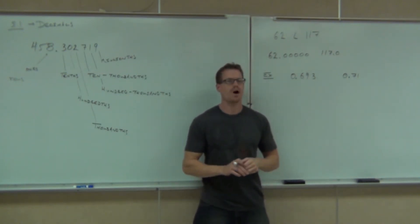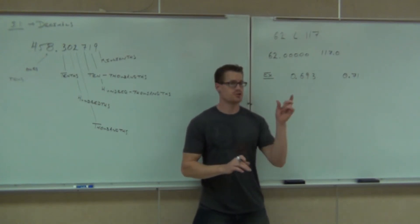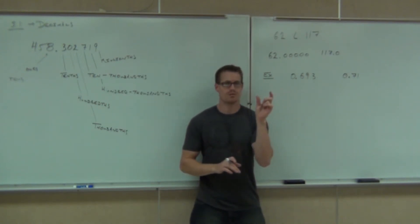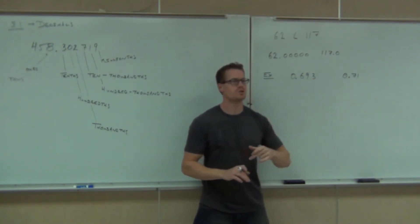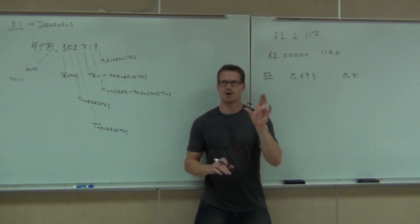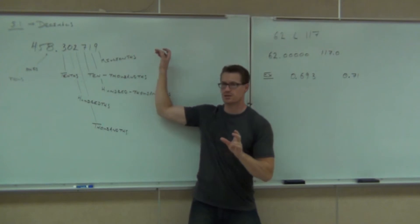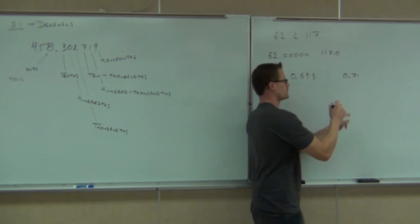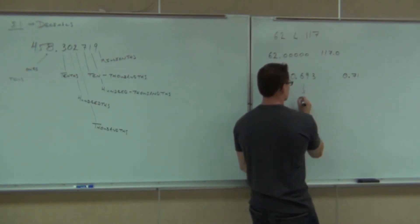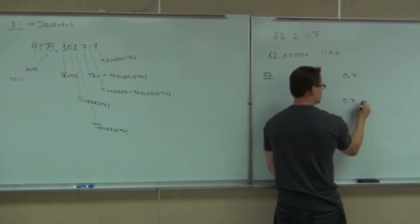Which one is bigger — 0.693 or 0.71? You could look at the first place value, that would be the tenths. Whatever has more tenths is a bigger number. Even though 0.693 is a longer number, you just recognize that the zero at the end of a decimal really doesn't do much. I could add zeros on here all day long and not change the value of that number. So I could have 0.693 and 0.710 — are these the same values? Yes.